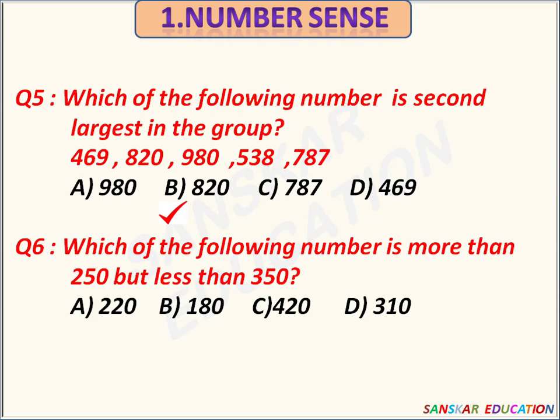Which of the following number is more than 250 but less than 350? Options are 220, 180, 420, 310. 310 is more than 250 but less than 350. Option D is the correct answer.